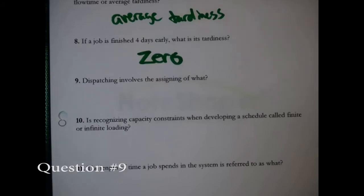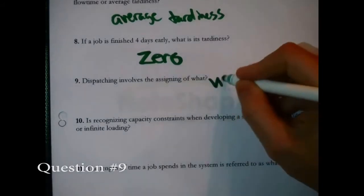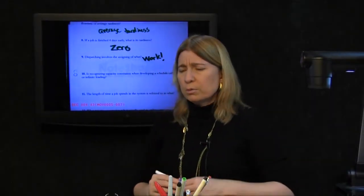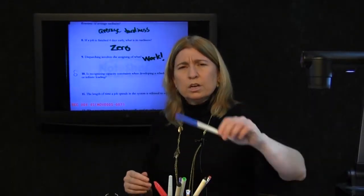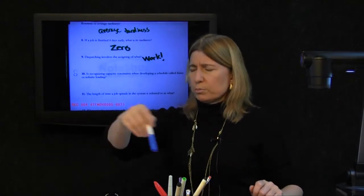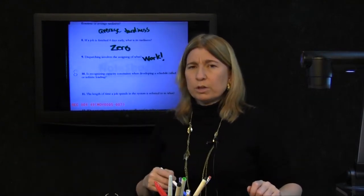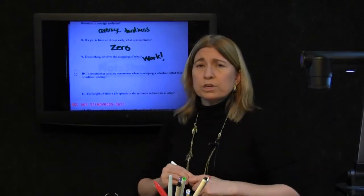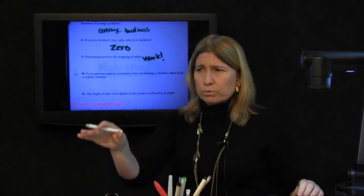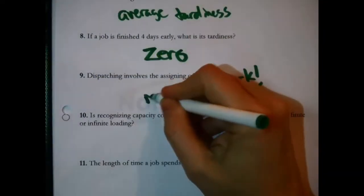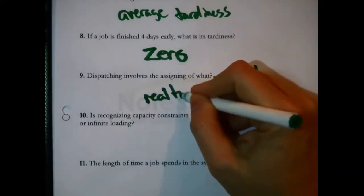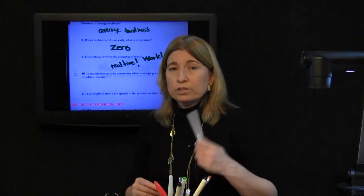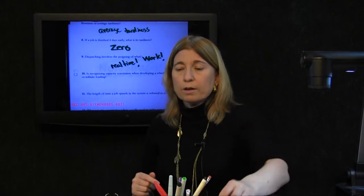Question 9: Dispatching involves the assigning of what? In one word: work. Dispatching involves the assigning of work. You might think that assigning work means you're doing planning, and that's true — but a key feature of dispatching is that you're assigning work to resources in real time. In planning you're doing it ahead of time; in dispatching you're doing it in real time, on the fly.